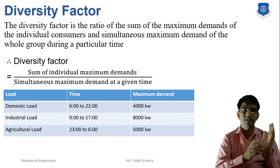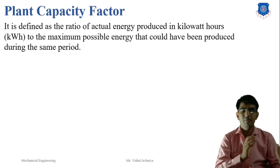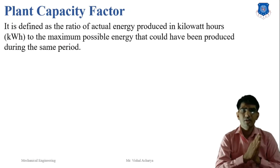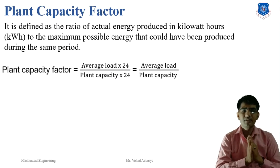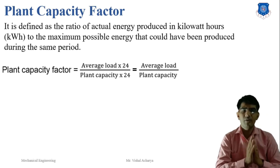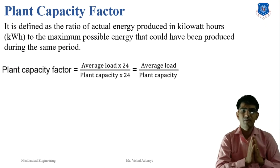Diversity factor is always greater than 1 because the sum of individual maximum demands does not match the simultaneous demand at any given time. The next term is the plant capacity factor. It is defined as the ratio of the actual energy produced to the maximum possible energy that could have been produced during the same period. Plant capacity factor = average load / plant capacity. If plant capacity is 500 MW and average load is 300 MW, then plant capacity factor = 300 / 500 = 0.6.